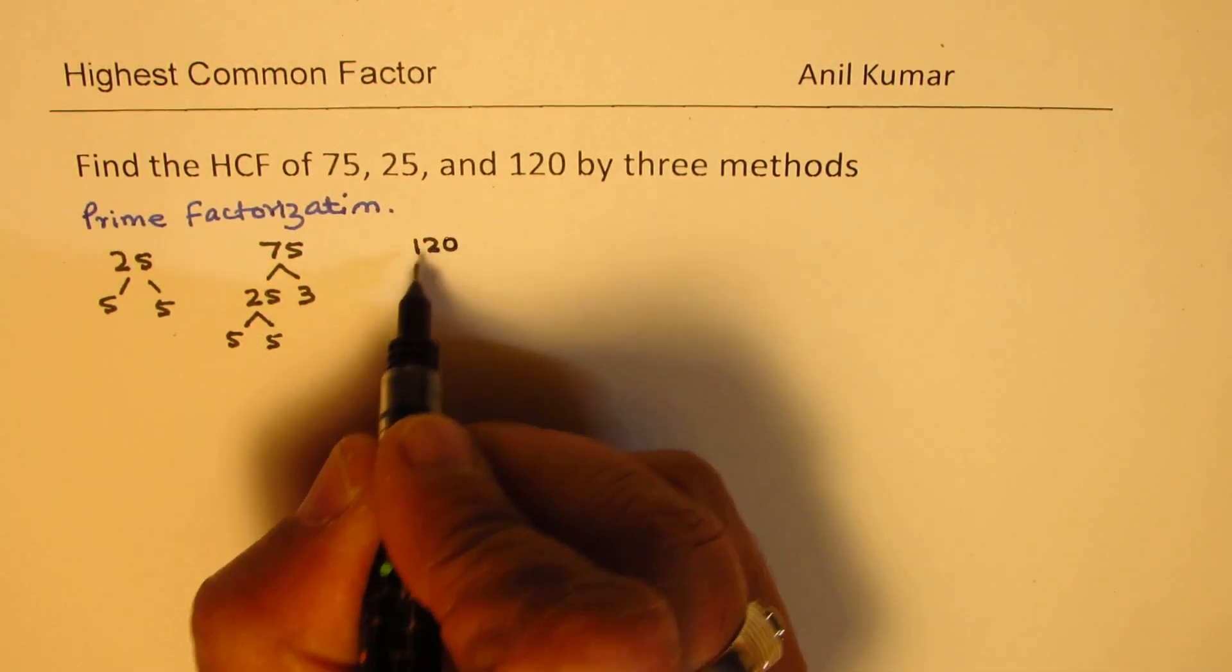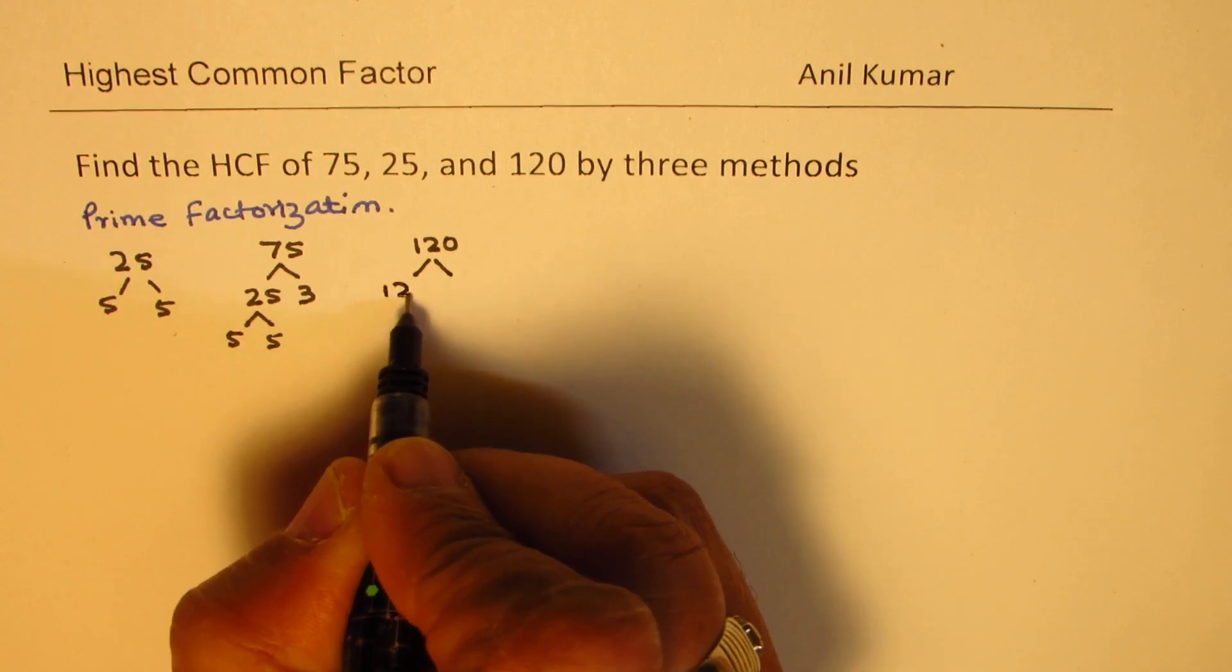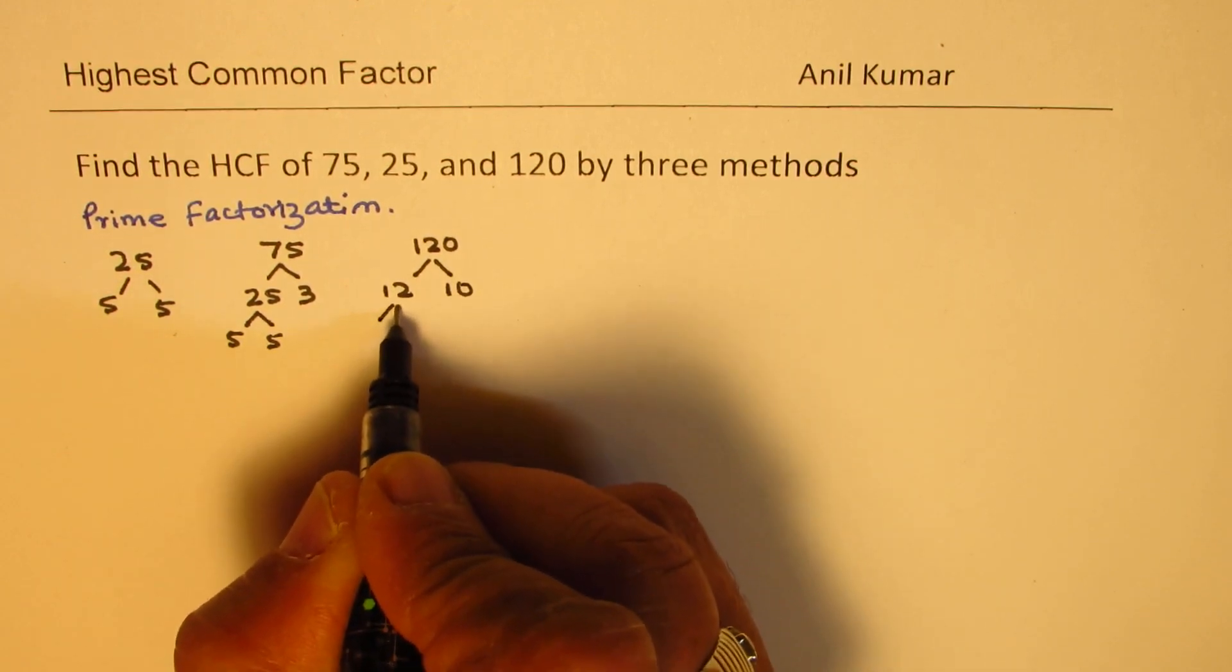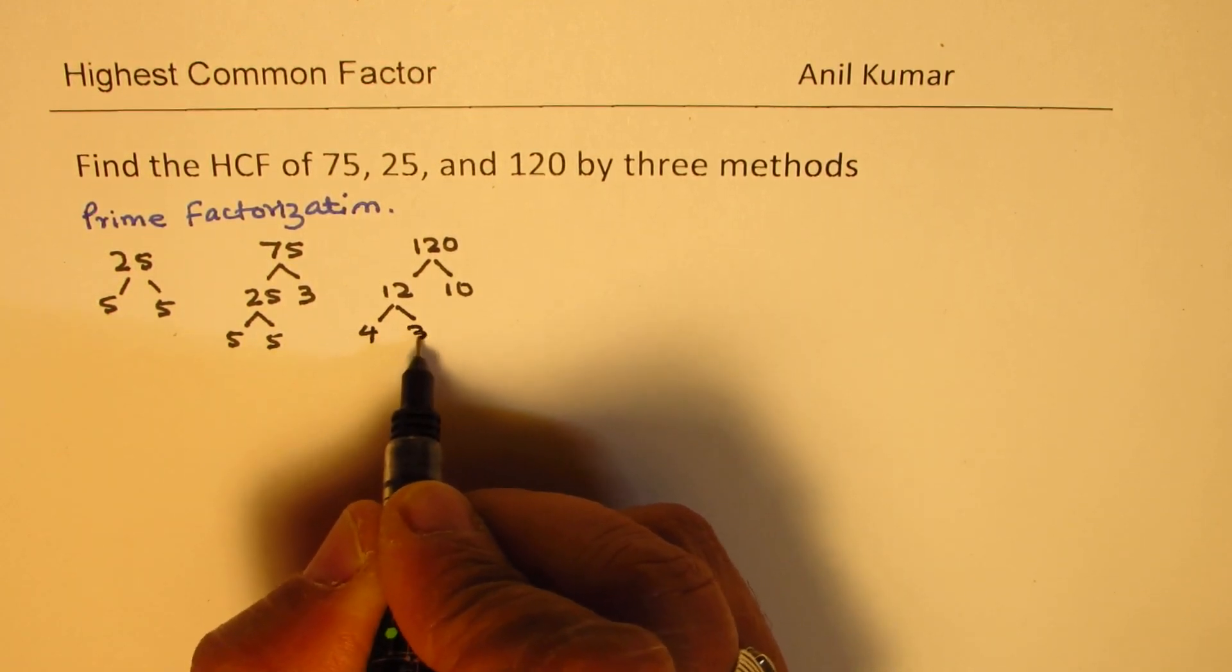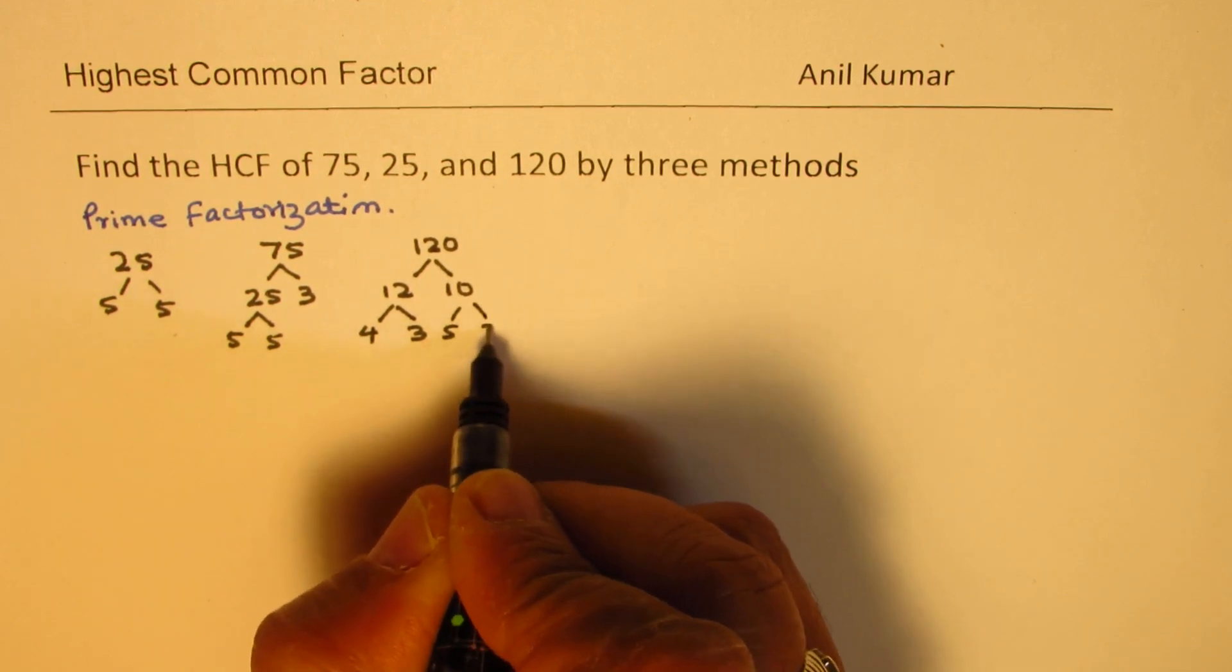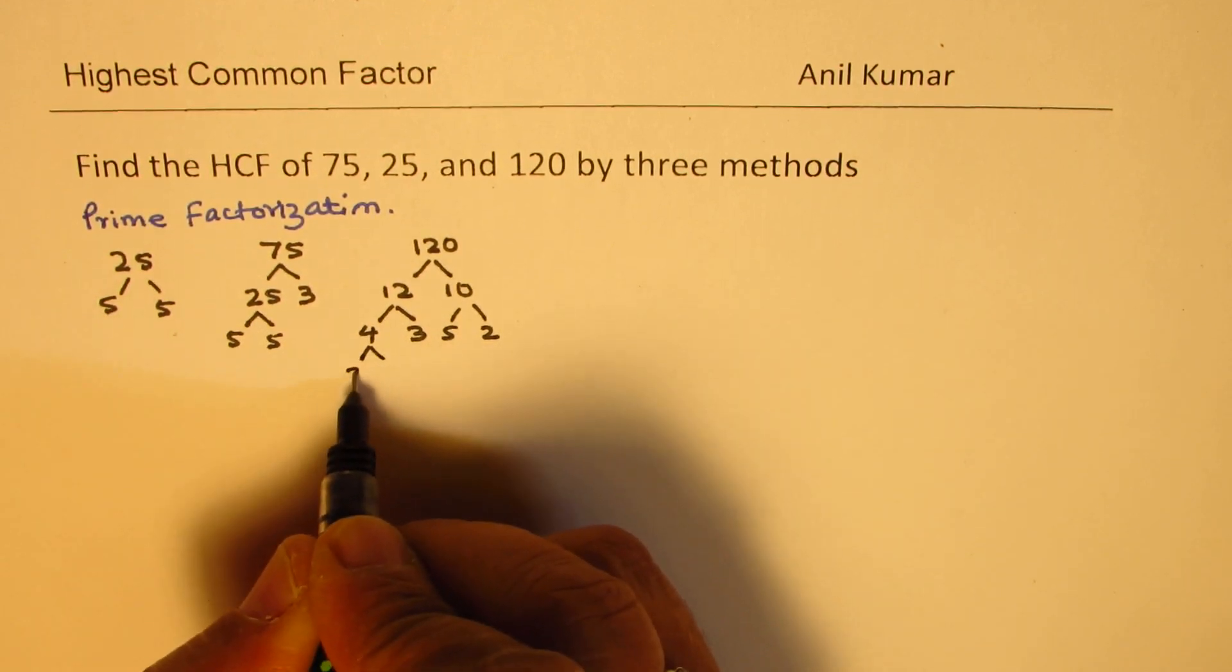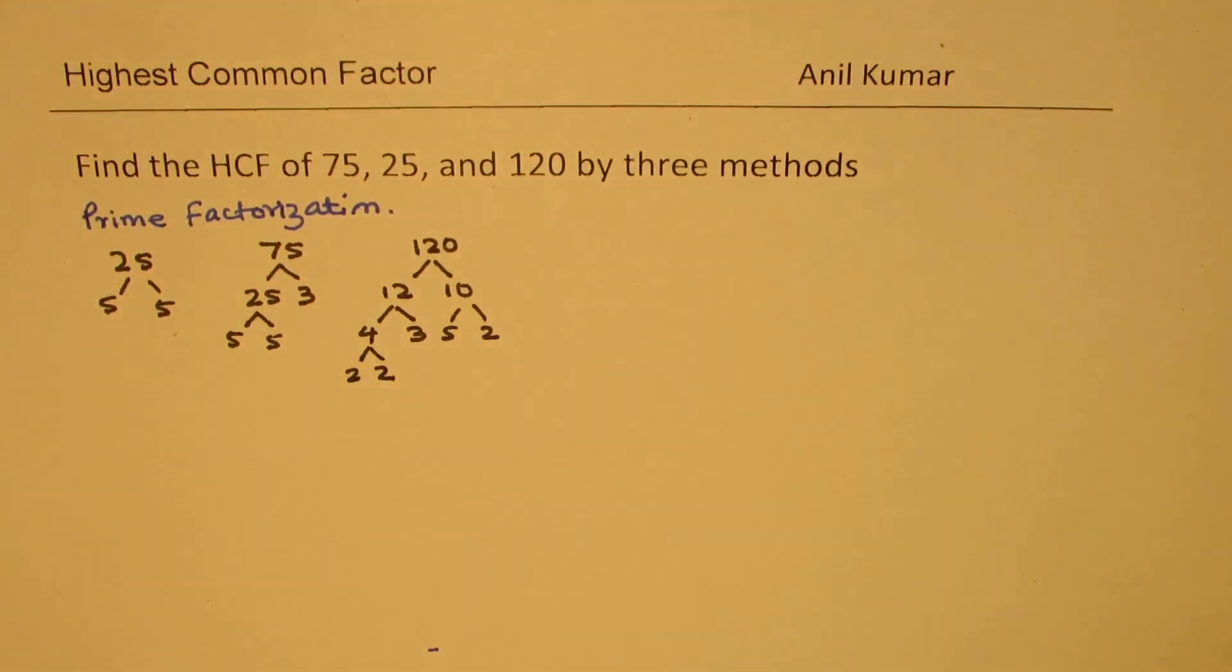Now, for 120, we could do 12 times 10 and then this goes 4 times 3 and here we get 5 times 2. 4 could be written as 2 times 2.